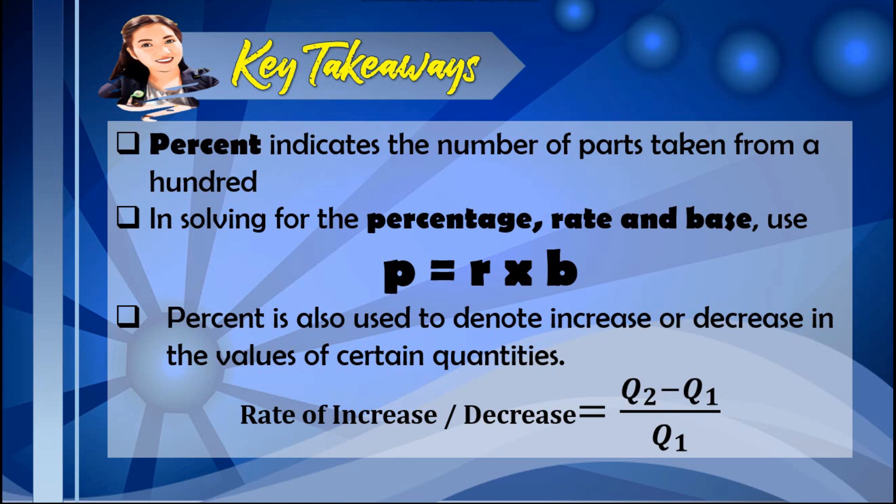These are the key takeaways for this lesson. Percent indicates the number of parts taken from 100. And in solving for the percentage, rate, and base, use the formula P is equal to R times B. Percent is also used to denote increase or decrease in the values of certain quantities. And the formula to be used is Q sub 2 minus Q sub 1 all over Q sub 1.